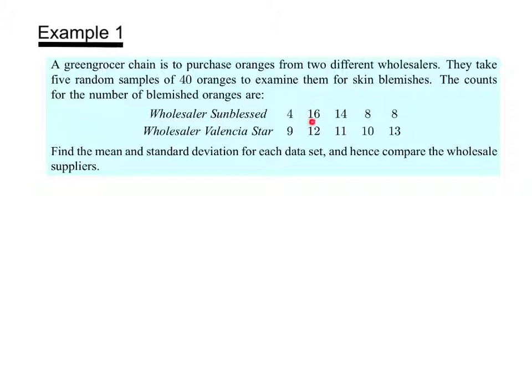In the second sample, there were 16 blemished oranges. In the third sample, 14 and so on. And we have the same data for the second wholesaler, Valencia Star. So we're asked to find the mean and standard deviation for each data set to help us compare the two wholesale suppliers.